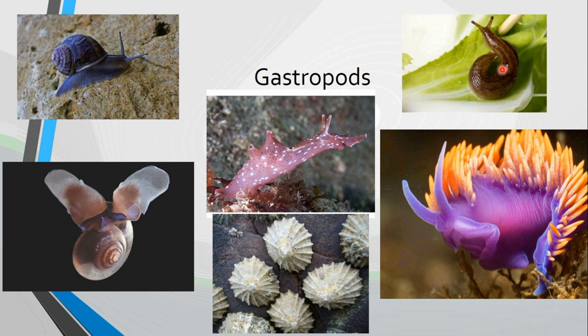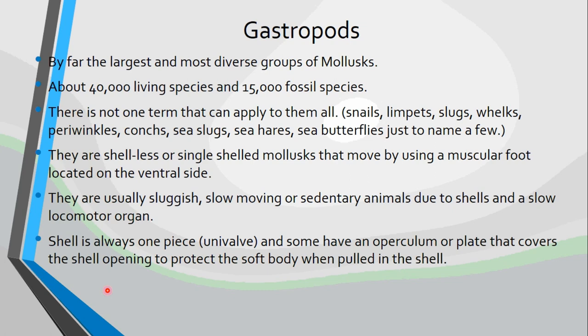By far, gastropods are the largest and most diverse group of mollusks. There are about 40,000 living species and about 15,000 fossil species. There is not one term that can apply to them all. Some common names include snails, limpets, slugs, whelks, periwinkles, conchs, sea slugs, sea hares, and sea butterflies — just to name a few. So there are a lot of different kinds of gastropods in that group.